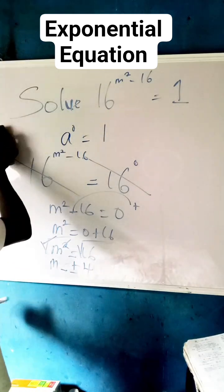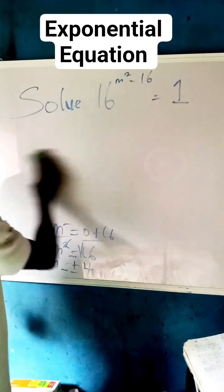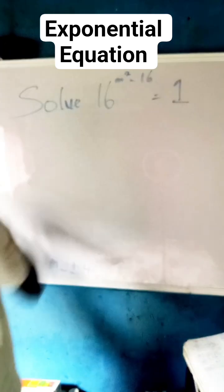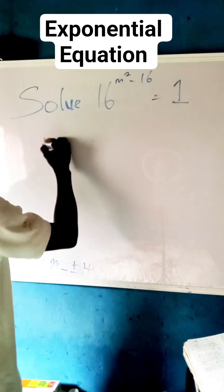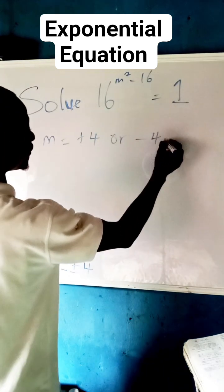The reason I put plus or minus is because when we have plus 4, which means m is equal to plus 4, or minus 4.